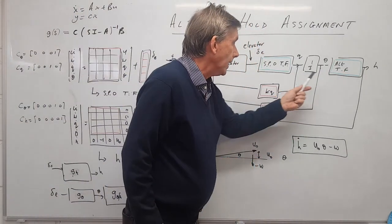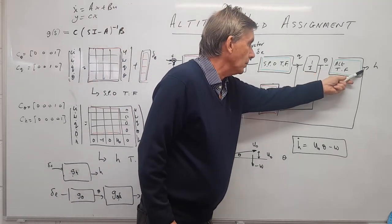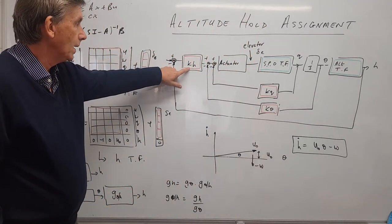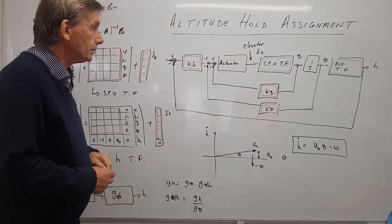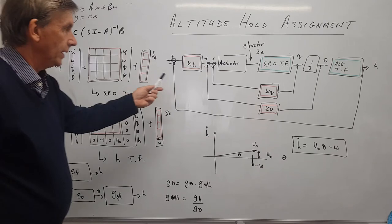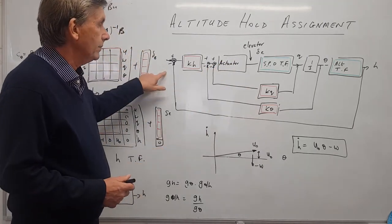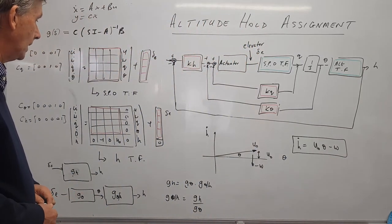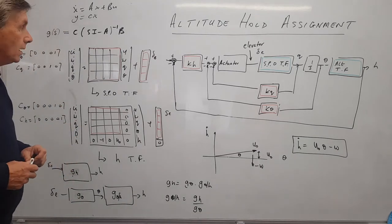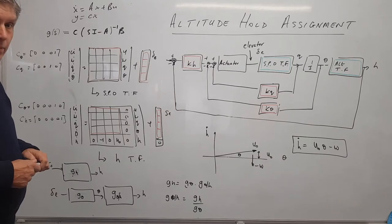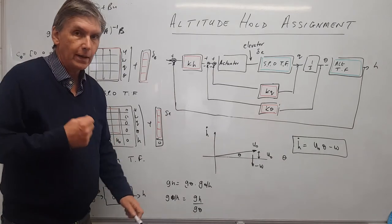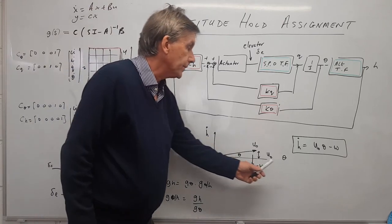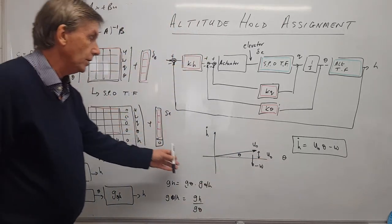Once we've got that transfer function and the pitch damper designed, we can plot the root loci of the system to choose the gain kh. Once we've got kh the whole thing is done. The last stage is to build this block diagram in Simulink, simulate it, and get a plot of the change in altitude against time. That is the bare bones of this design — it's about a three-quarter-of-an-hour video going through it step by step with detailed MATLAB code.